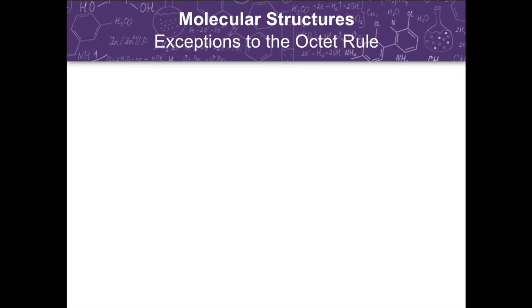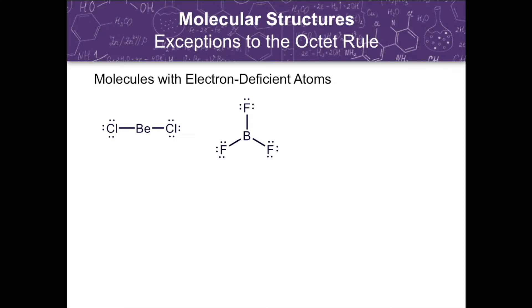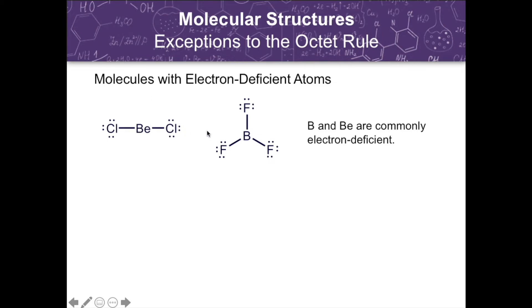There are three important exceptions to the octet rule. The first is molecules with electron-deficient atoms. In gaseous molecules containing either beryllium or boron as the central atom, the atom is often electron-deficient — it has fewer than 8 electrons surrounding it, an incomplete octet. The Lewis structures of gaseous beryllium chloride and boron trifluoride show only 4 electrons around beryllium and only 6 around boron. Surrounding halogen atoms don't form multiple bonds to give them an octet because halogens are much more electronegative than beryllium or boron.